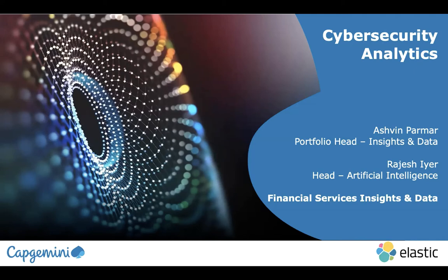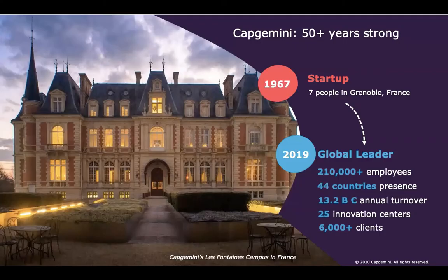My name is Rajesh Iyer. I head up the Artificial Intelligence Group for Financial Services at Capgemini. I'm here with my colleagues Ashwin Parmar, who heads up all the different practice areas within Capgemini, and Ayush Sharma, our go-to-market lead. Before I step into cybersecurity analytics, I want to spend a few minutes talking about Capgemini itself.